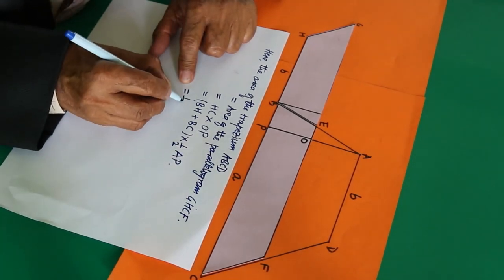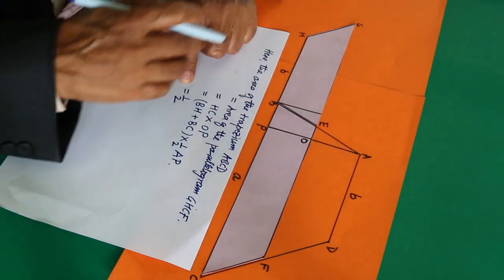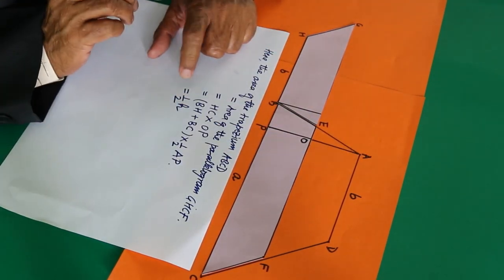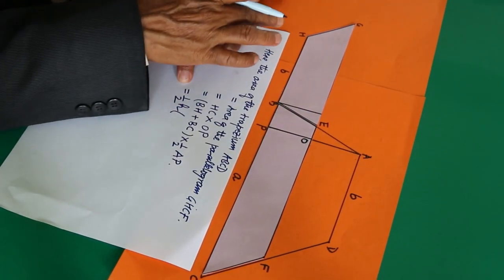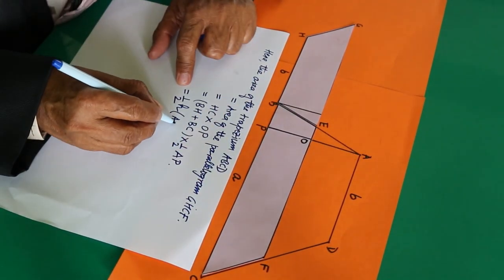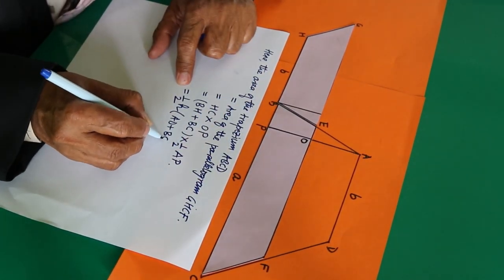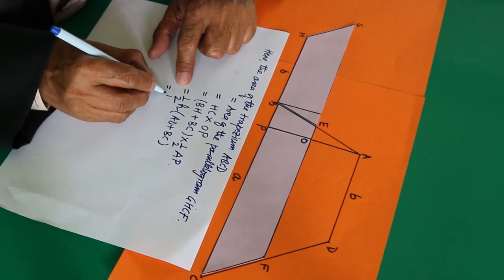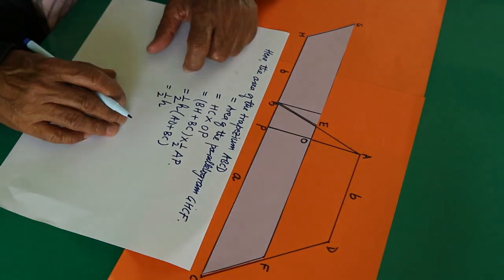So this half comes here. AP is the height of the trapezium. Let us denote it by H. BH is equal to AD, AD plus BC. This is half height. Half height times AD is B plus BC is A.